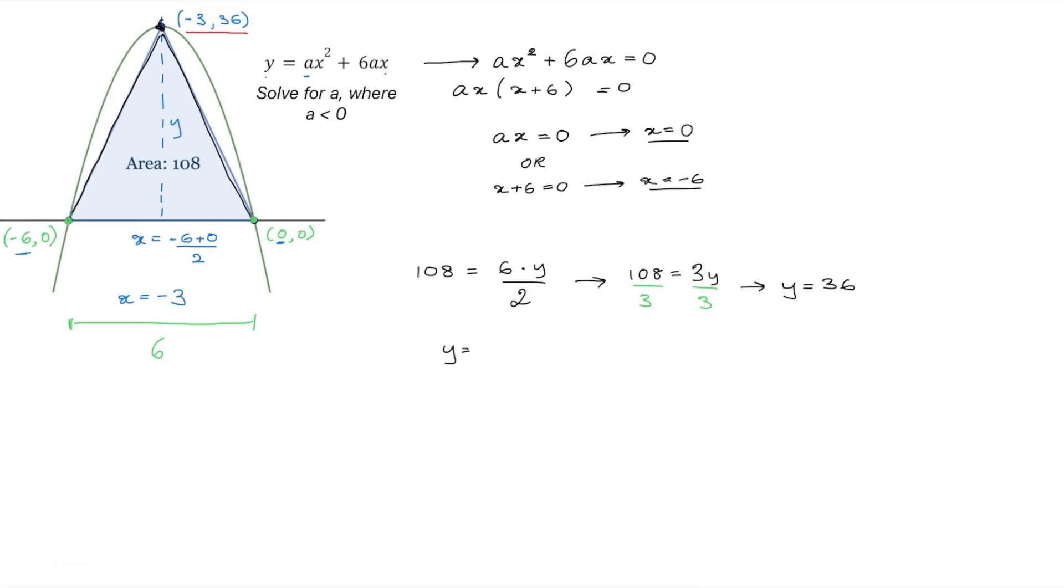Our equation is y equals ax squared plus 6ax. Now let's substitute in the values of the vertex. We have y is equal to 36. This is equal to a times x squared which is going to be negative 3 squared plus 6 times negative 3, which is x, times a.